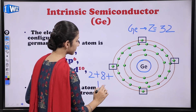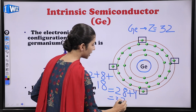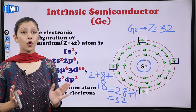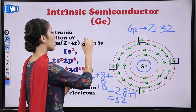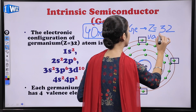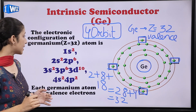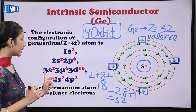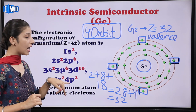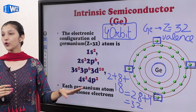2 + 8 + 18 + 4 = 32. The electrons in the fourth orbit are the valence electrons. The electronic configuration is 1s2, 2s2, 2p6, 3s2, 3p6, 3d10, 4s2, 4p2. If there are 4 more, this is complete and stable, but here we have 4 electrons. So each germanium atom has 4 valence electrons.